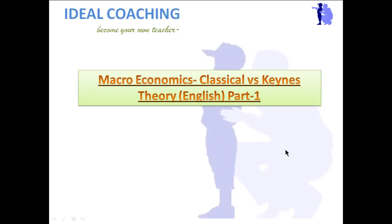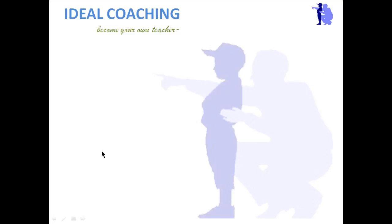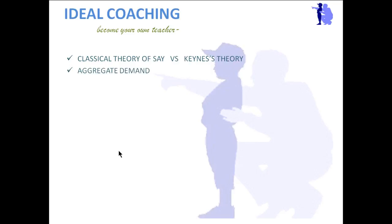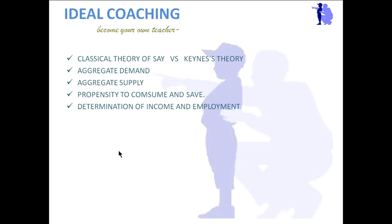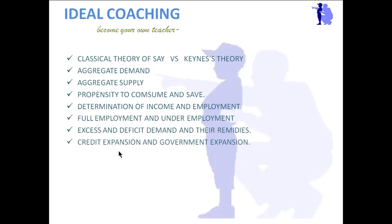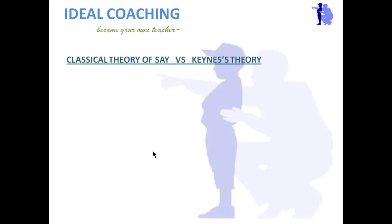Hello friends, welcome to Idle Coaching. The topic today we are covering is macroeconomics: Classical versus Keynes Theory, in English. This is part one. The topics we'll be covering are classical theory of Say versus Keynes theory, aggregate demand, aggregate supply, propensity to consume and save, determination of income and employment, full employment and underemployment, excess and deficit demand and their remedies, and credit expansion and government expansion.